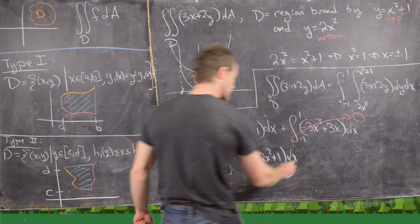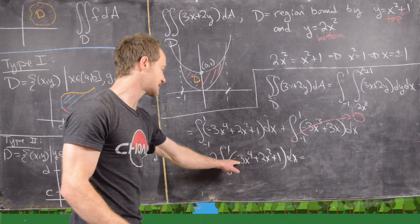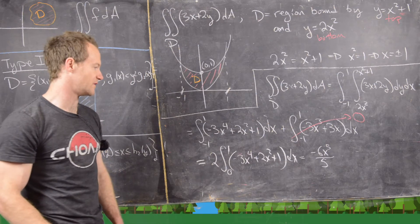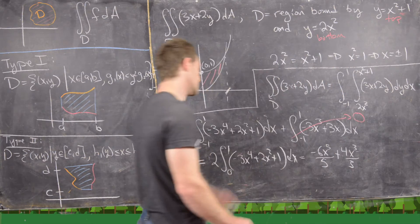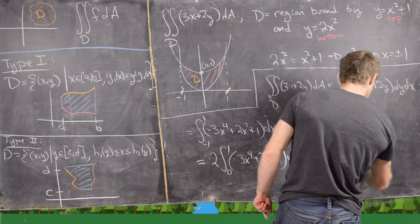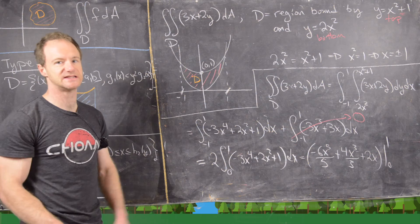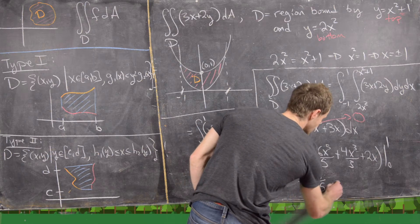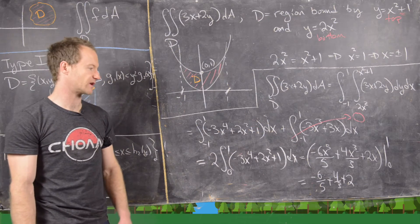Taking the antiderivative and multiplying through by 2: we get −6x⁵/5 + 4x³/3 + 2x, evaluated from 0 to 1. Since evaluating at 0 gives 0, everything comes from plugging in x = 1, giving −6/5 + 4/3 + 2. That is the final answer, which you can simplify numerically.